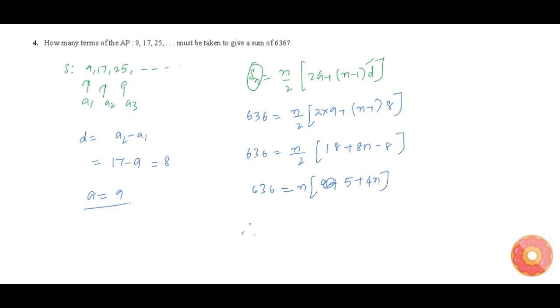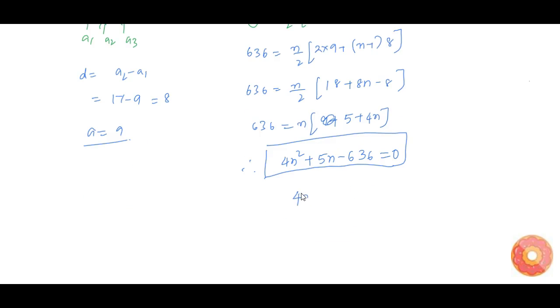Therefore, 4n square plus 5n minus 636 is equal to 0. This is our quadratic equation. We need to solve for n which on solving is 4n square plus 53n minus 48n minus 636 is equal to 0.